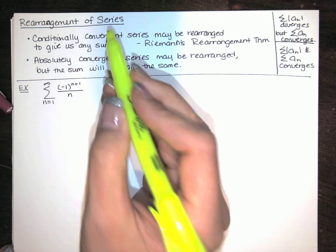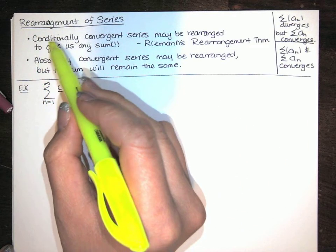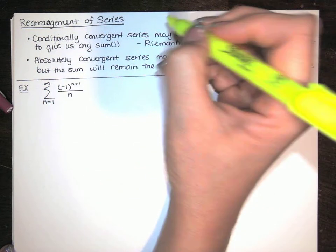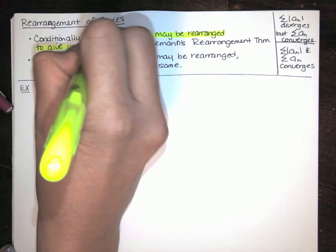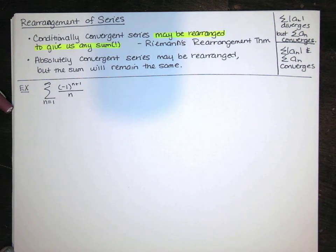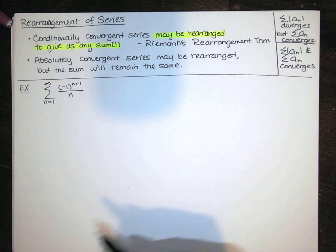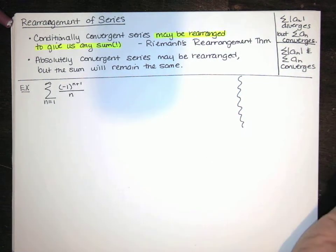Now let's talk about this rearrangement again. A conditionally convergent series can be rearranged to give us any sum we want — I think that is really cool. Absolutely convergent series can be rearranged, but no matter how you rearrange them, you're going to get the same sum every time. This means that addition is different when you're talking about infinitely many terms.